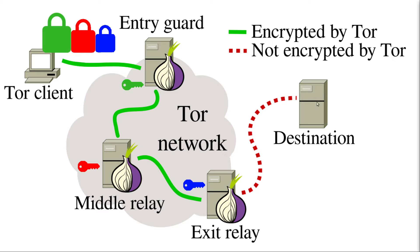As far as the Tor encryption goes, the exit relay removes the last layer and then finally serves up that request to your destination. The Tor network works similarly in reverse, but instead it's adding on layers of encryption. The exit relay puts on its first box of encryption, then the middle relay puts on another one, then the entry guard puts on another one. And then you have all three keys to those three layers of encryption on your end, so you just strip all of them off.